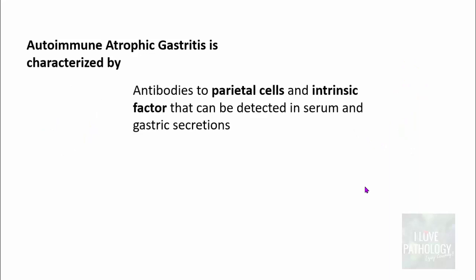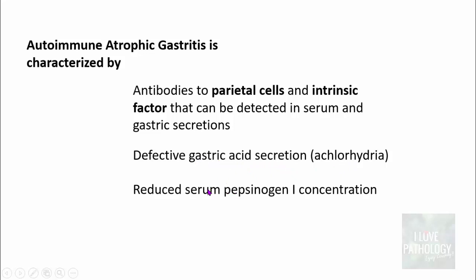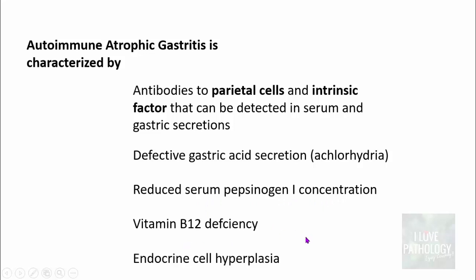The classical features of autoimmune atrophic gastritis include: antibodies to parietal cells and intrinsic factor, detectable in serum as well as gastric secretions; defective gastric acid secretion referred to as achlorhydria; reduced serum pepsinogen 1 concentration; vitamin B12 deficiency; and lastly, endocrine cell hyperplasia.